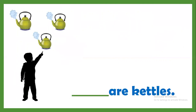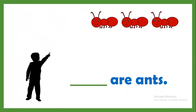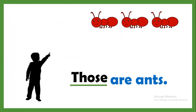Now the cattle are close to the boy, so these are cattle. Very good. Next. Now ants are far from the boy, so those are ants.